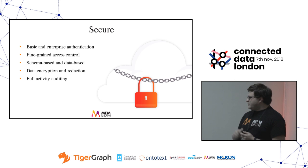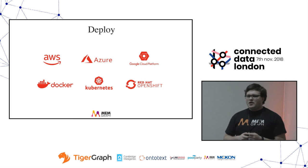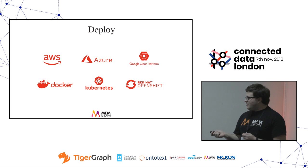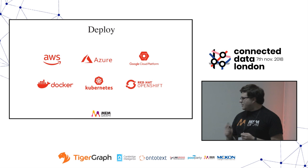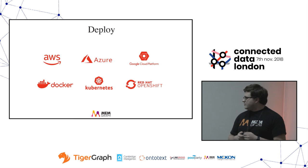Deploy on anything. We're Linux-based on Docker, so you can run it inside Kubernetes. Some customers want OpenShift, so we have that as well. We use commodity hardware — standard architecture that you can find across all cloud providers.